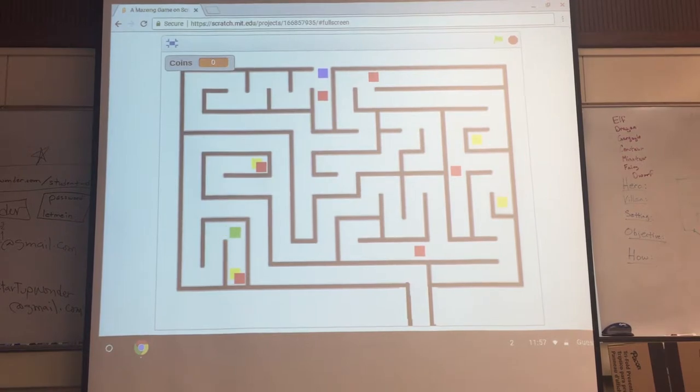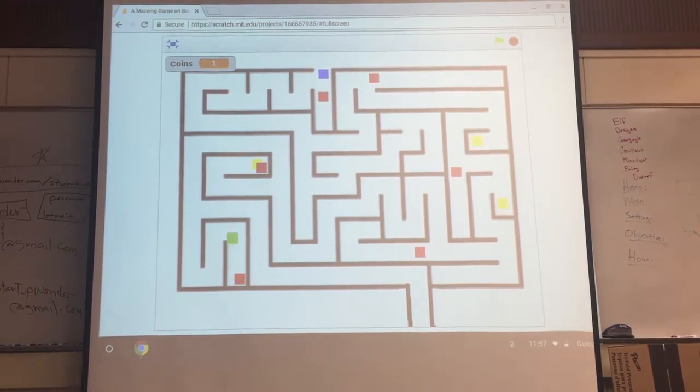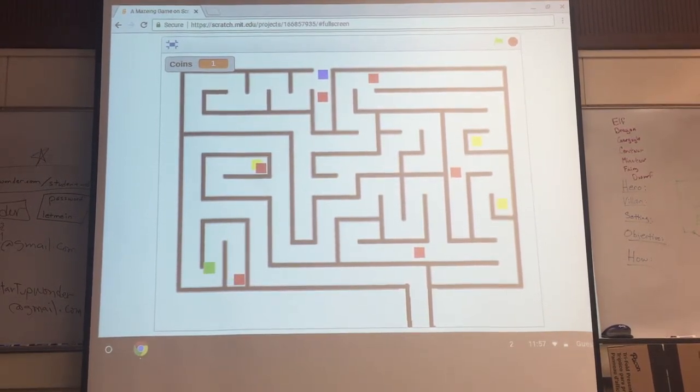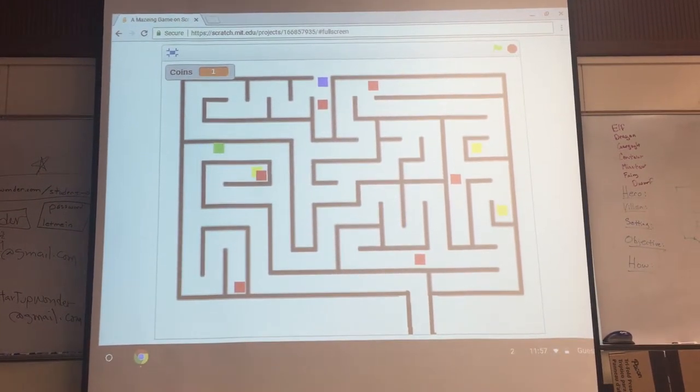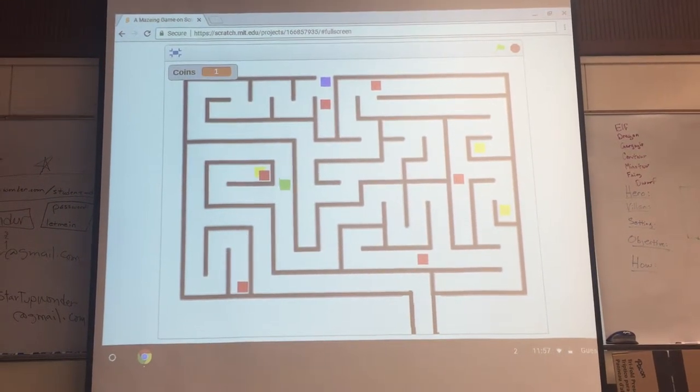Then you have to get all of the yellow coins or else it won't let you use the finish line. And you can't touch the red, because I know Sadie would lose.